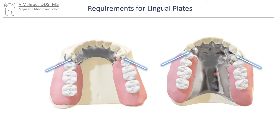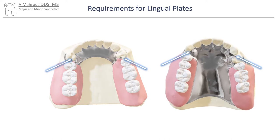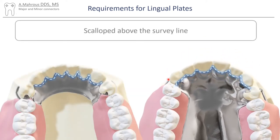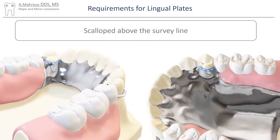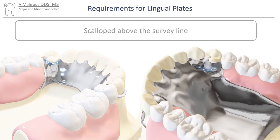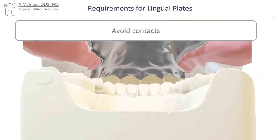If lingual plating is used for maxillary major connectors, it's important to take into consideration some of the same features used for a mandibular lingual plate. For example, rests should be placed at both ends of the lingual plating. Lingual plating of maxillary anterior teeth follows a similar outline by going from contact to contact above the cingulums of the anterior teeth and above the survey lines of the posterior teeth. Another consideration is to avoid interfering with the occlusion, as this is an area where incisors might contact.